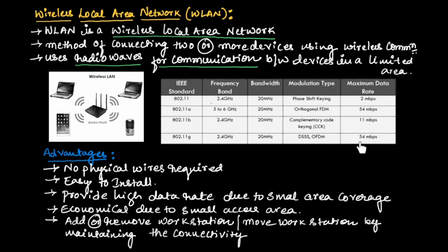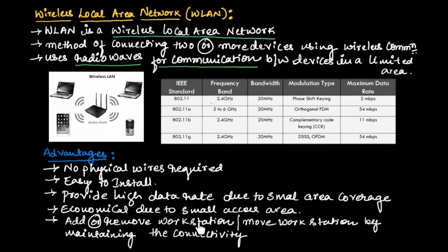These are the different IEEE standards on which WLAN operates. There are many advantages of wireless local area network: no physical wires are required for connecting devices, making it easy to install. Since it provides communication within a small area, it delivers a high data rate. It is economical as it covers a small area. Also, adding, removing, or moving a workstation while maintaining connectivity is possible in a wireless local area network.